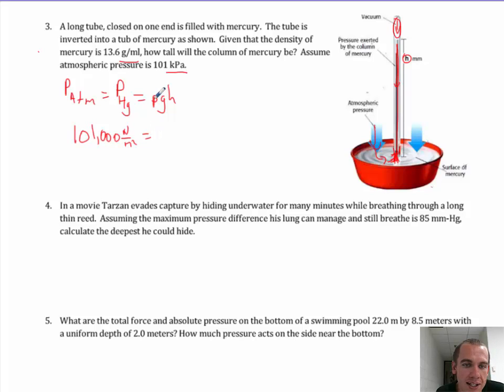So this is equal to the density of mercury which is 13.6 grams per milliliter or 13,600 grams per cubic meter times g, 9.8 meters per second per second times h, whatever it is.